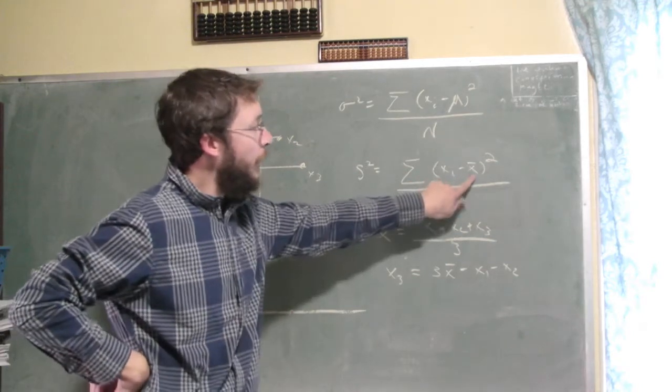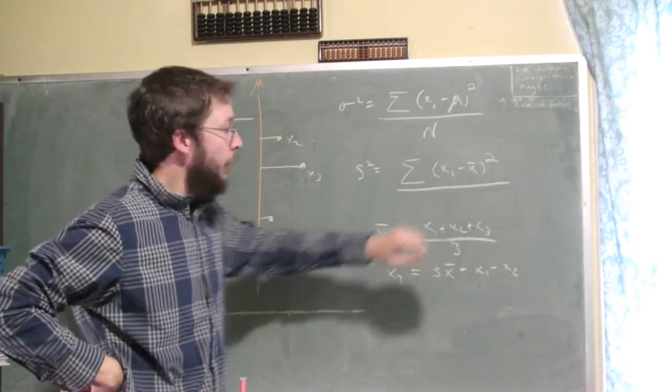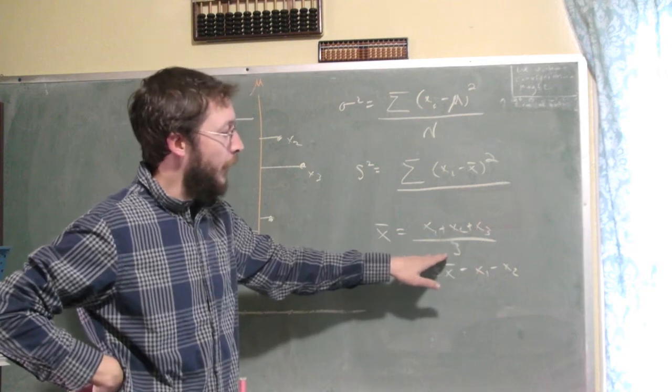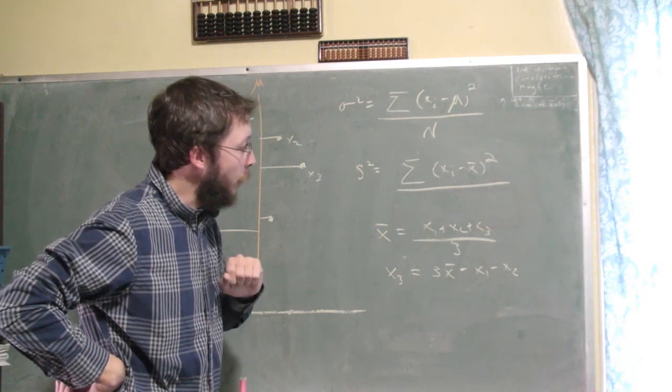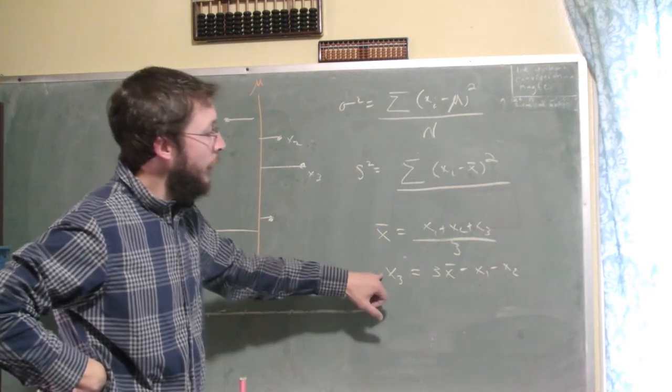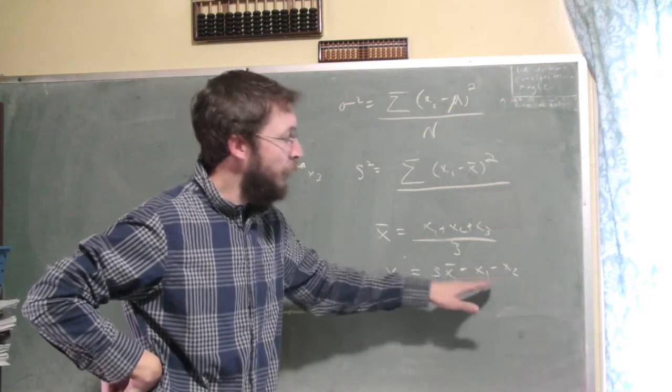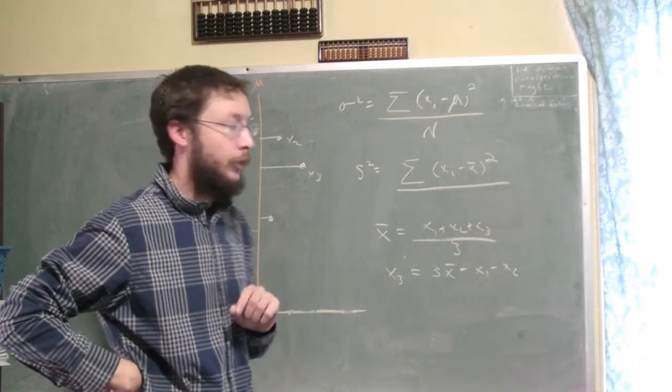And so how did we obtain that sample mean? We averaged the three data points that we have, and because of that, what we get is we get this equation that says x3 is really just a sum of these random variables, x1 and x2, right?